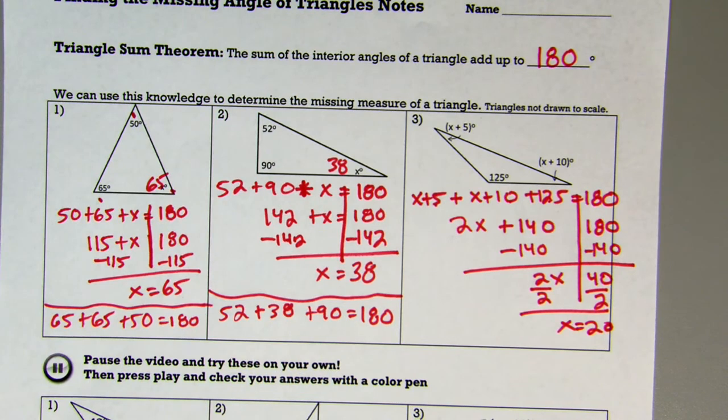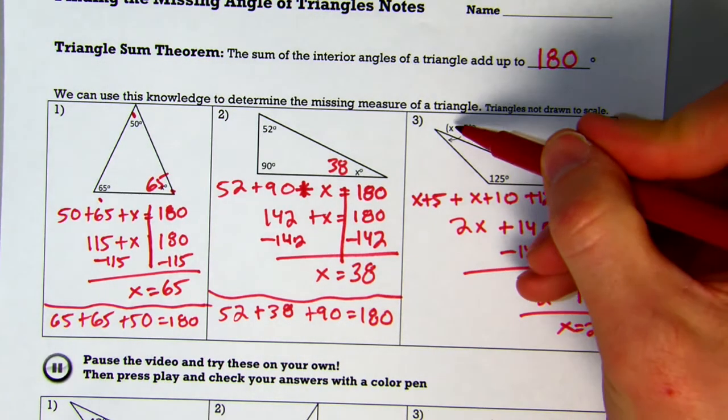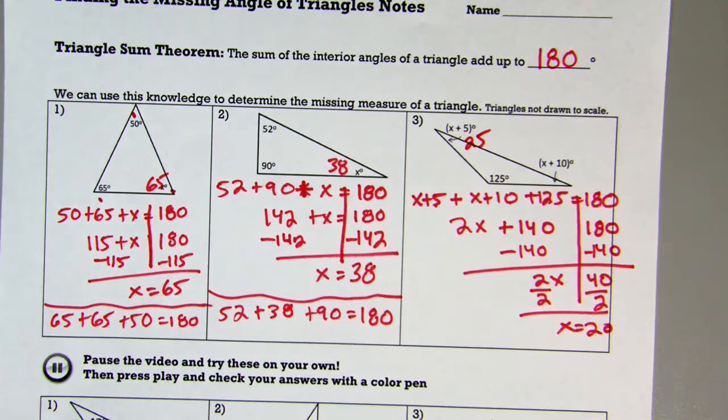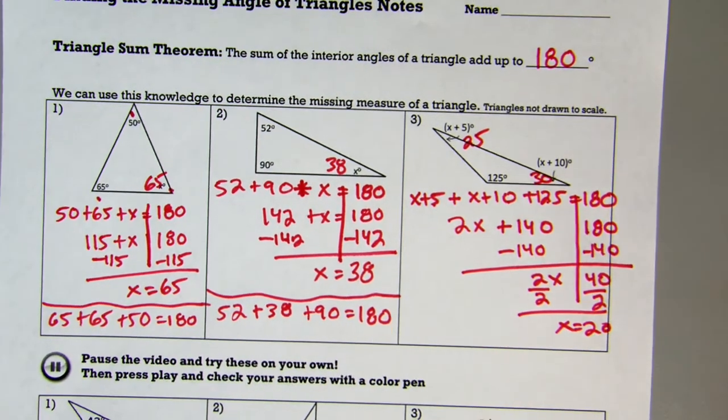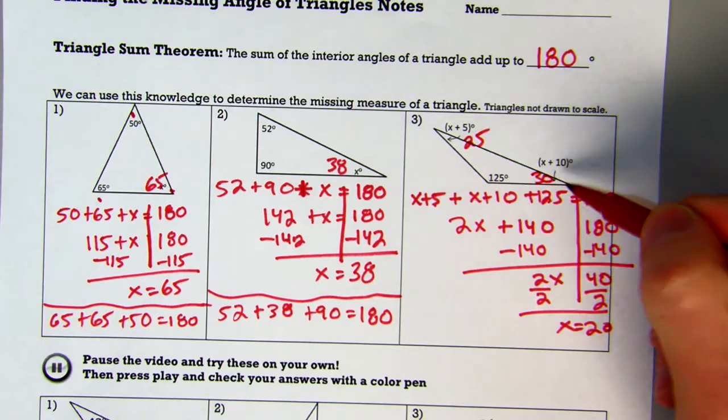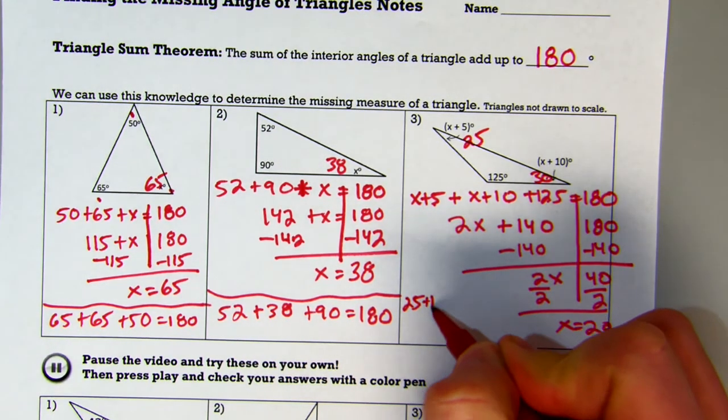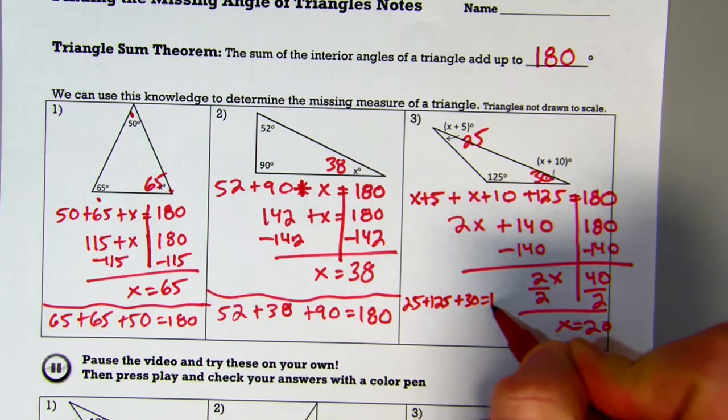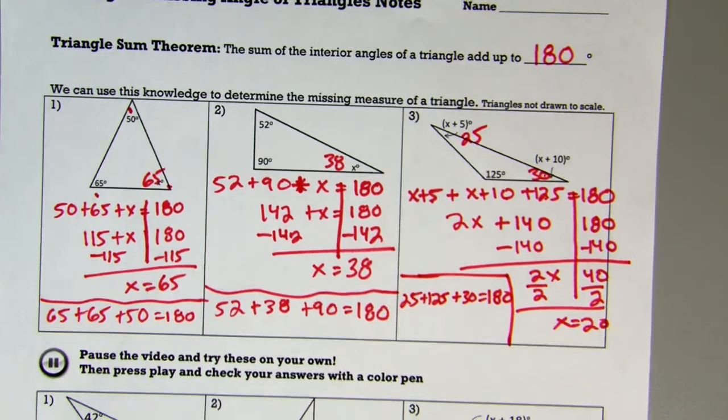Now I'm not done just because I have the value of x. I need to actually plug it in to figure out my angle values. So 20 plus 5 is 25 for that value, and 20 plus 10 is 30 for that value. Now I'm going to check it by doing 25 plus 30 plus 125. 25 plus 125 is 150, plus another 30 is 180. So yes, that does check and that does work.